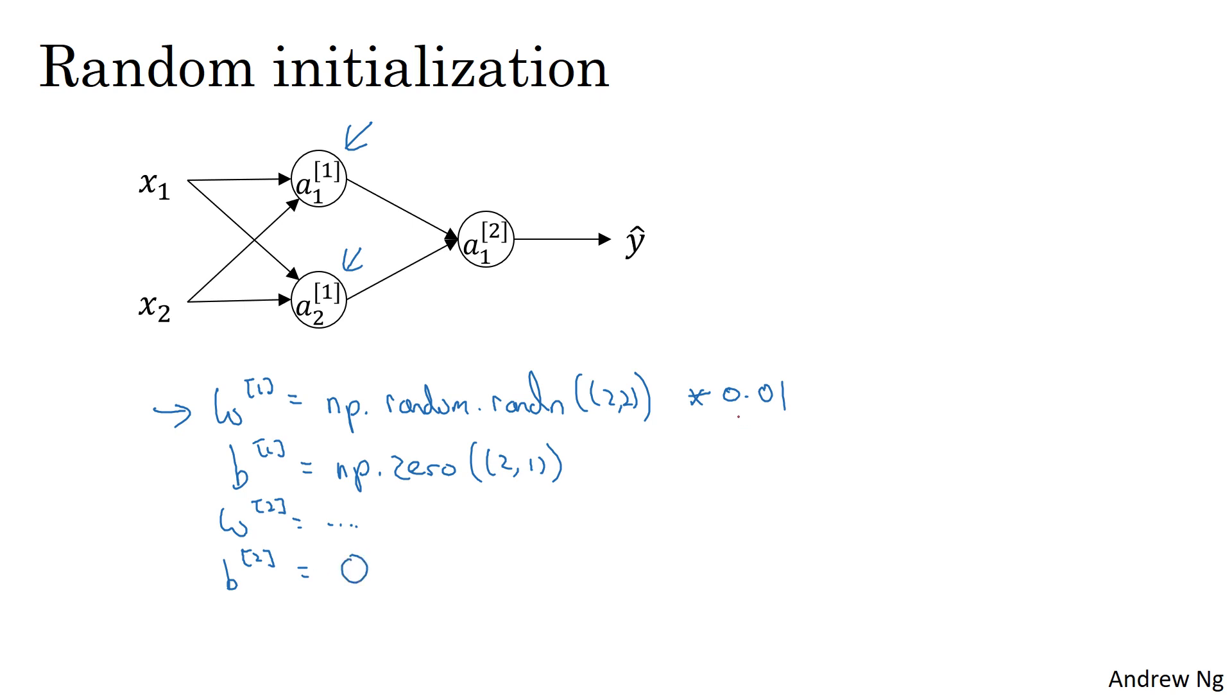So you might be wondering, where did this constant come from, and why is it 0.01? Why not put the number 100 or 1000? Turns out that we usually prefer to initialize the weights to very small random values.